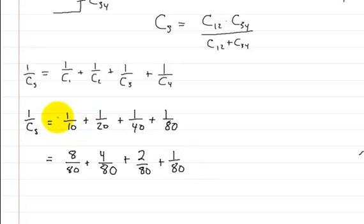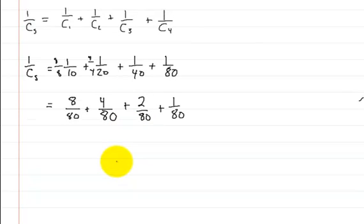And all I did was multiply this one by 8 on top, 8 on the bottom, to give you this right here. This one right here, all I do is multiply 4 on top, 4 on the bottom, to get this one right here. And this one is just 2 on top, and 2 on the bottom, and you get this. So at this point, then we just need to add them up. So let's see, here we have 1 over the capacitance in series. You add this up, you're going to get 15 over 80.